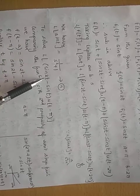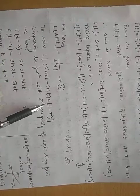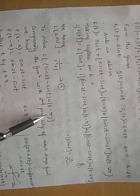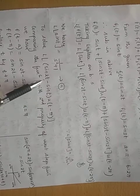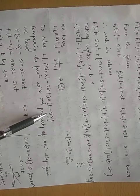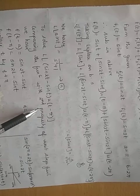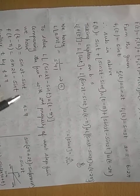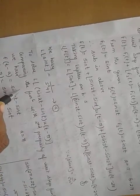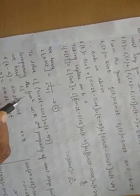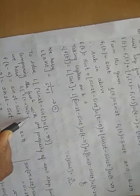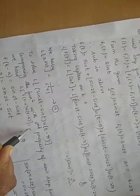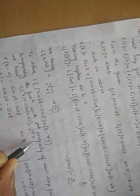To solve L{[sin(2t) − sin(t)]·u(t−π)}, we use the second property of the unit step function: L{f(t−a)·u(t−a)} = e^(−as)·F(s). We compare the given expression with this property.